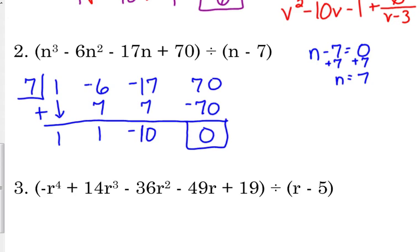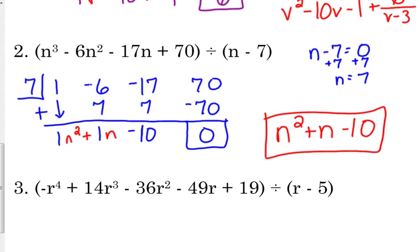Our remainder is zero, so that means that that divided evenly. That means n minus 7 is a factor of that polynomial. So our answer is going to look like this. We started with n cubed, so we've got n squared plus n minus 10. There's no remainder, so this is the answer. And we could check the exact same way. Type in the original problem, type in what we say is the answer, and when we look at the table, they're going to have the exact same y values.